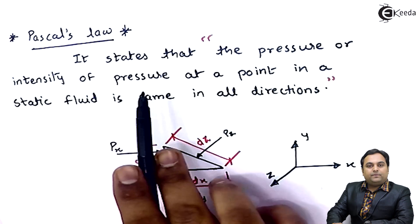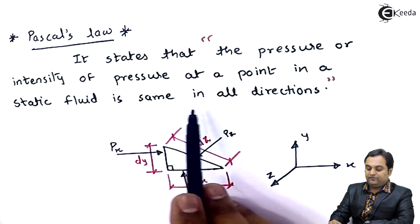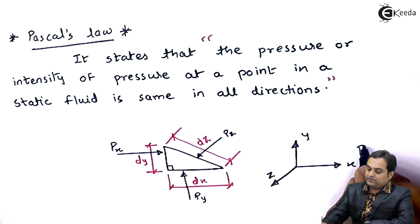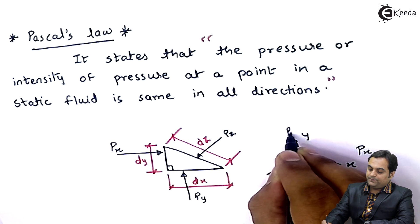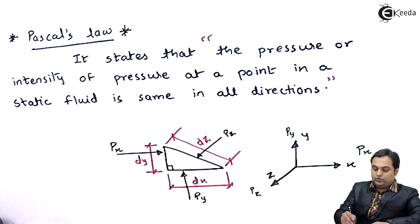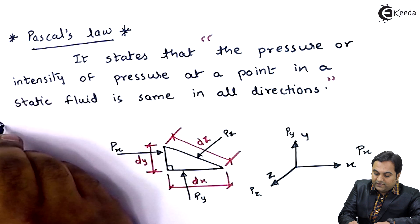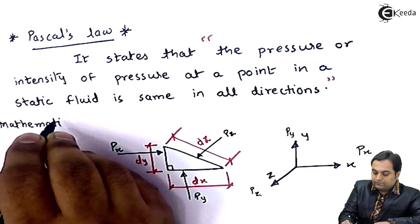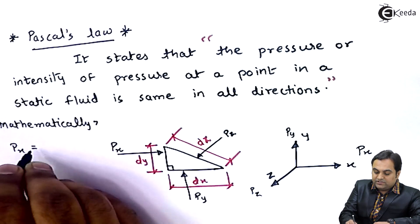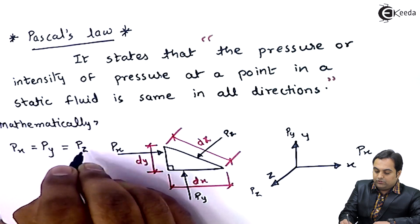As per the statement of Pascal's law, the pressure or intensity of pressure at a point in a static fluid is same in all directions. So if I consider along x, along y, and along z, all three values of pressure will be same. Mathematically: pressure along x direction equals pressure along y direction equals pressure along z direction.